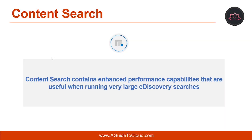Let's understand what Content Search is all about. In contrast to eDiscovery searches, the Content Search feature in the Compliance Center has no limits on the number of mailboxes and sites that you can search, nor on the number of searches that can run at the same time. You can use the Content Search eDiscovery tool in the Compliance Center in Office 365 or Microsoft 365 to search in-place items such as email, documents, and instant messaging conversations in your Office 365 organization.